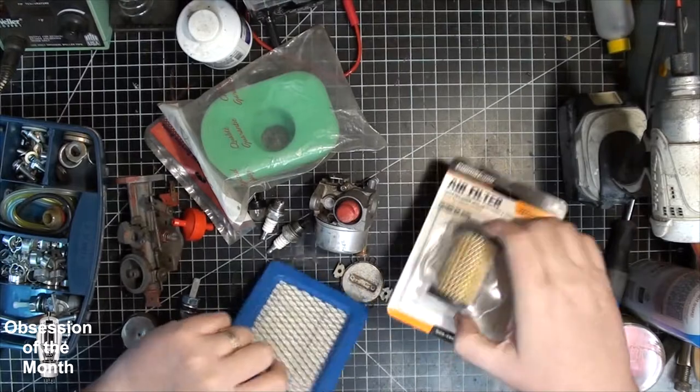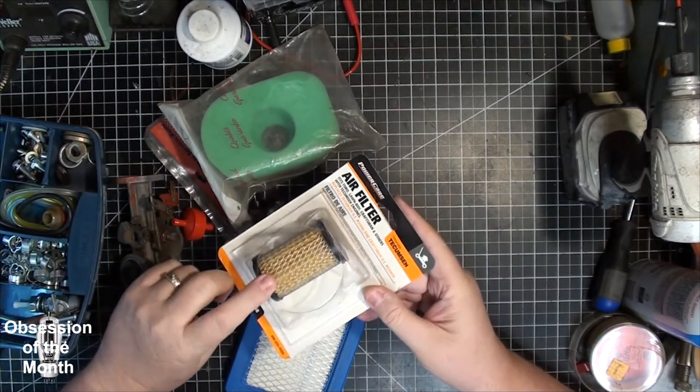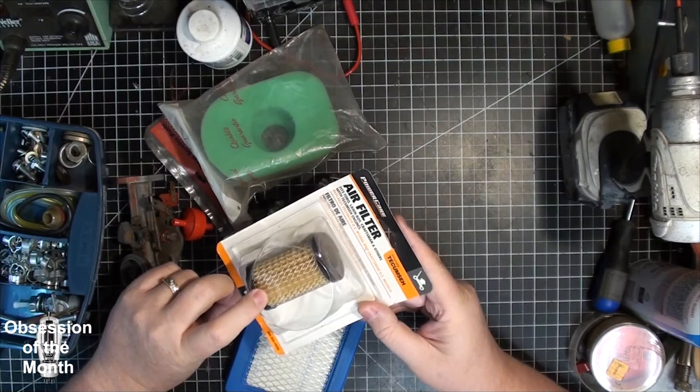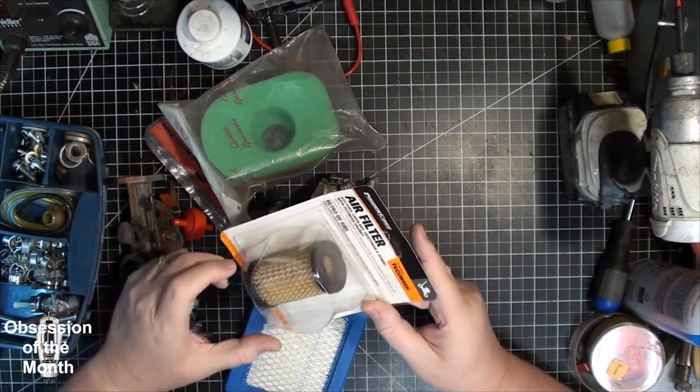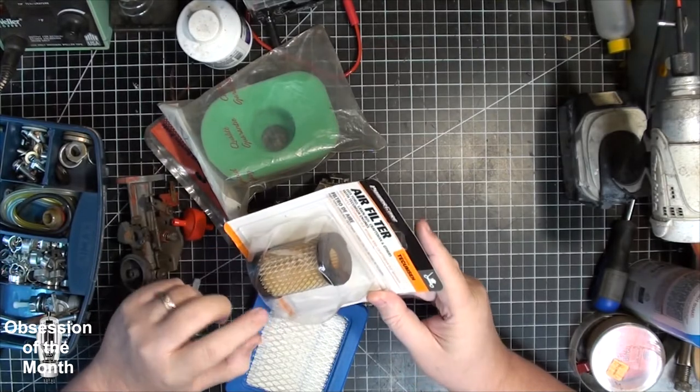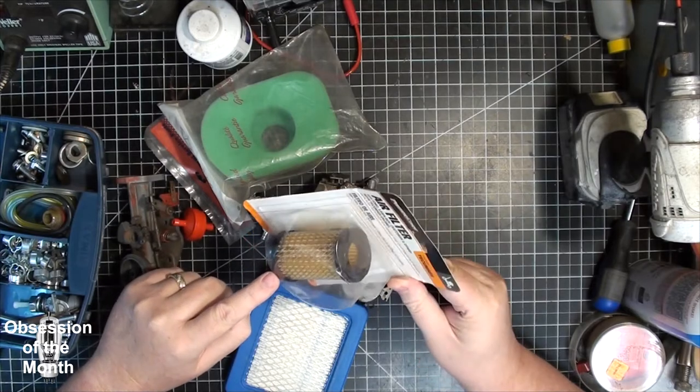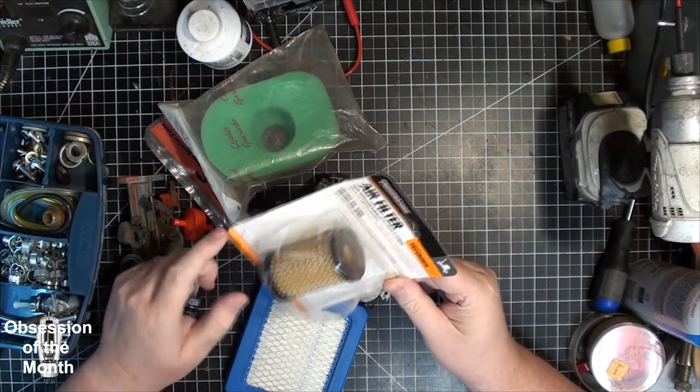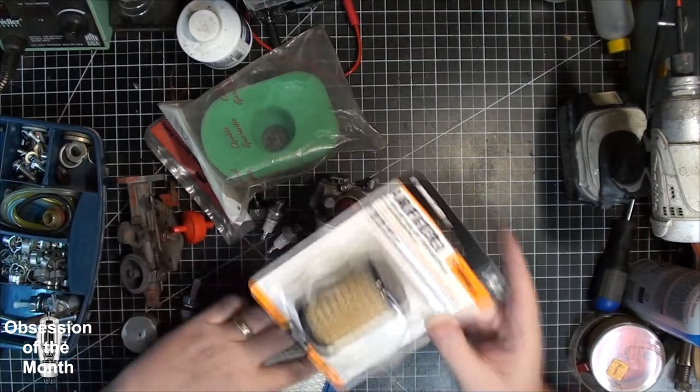This is for a modern Briggs and Stratton, I believe it's a Quantum engine. This is for an older Tecumseh. These are not very good filters, but with the Tecumseh you don't have much of a choice. These are kind of throw away. I've reused them in the past, but really you just need to buy a bunch and the minute they get clogged, toss them.